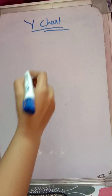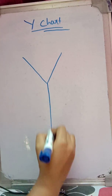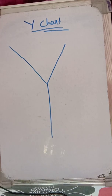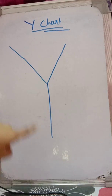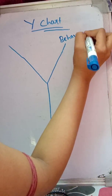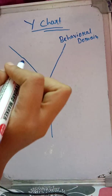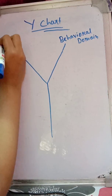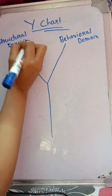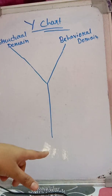The Y-chart basically looks like the English alphabet Y. These three lines represent the three domains. The first domain is the behavioral domain, the second is the structural domain, and the third is the geometrical layout domain.